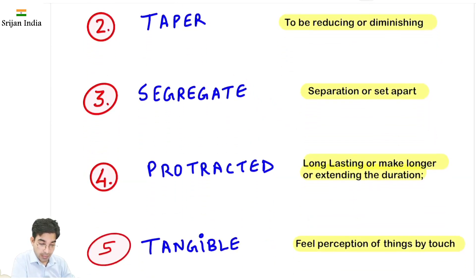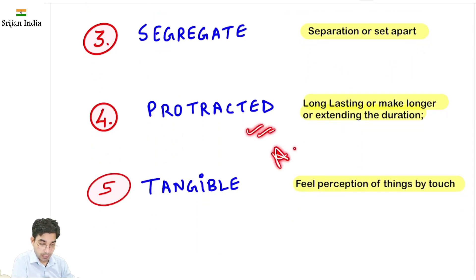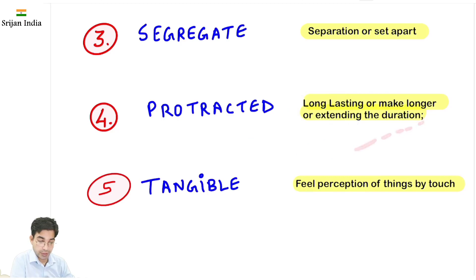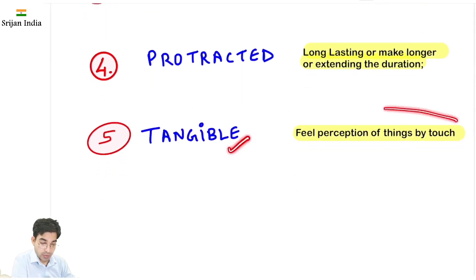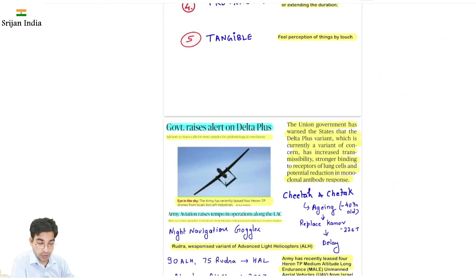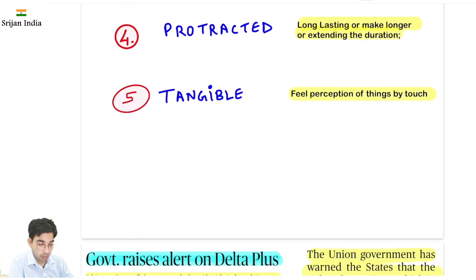'Segregate' — aggregate karna matlab saath laana, segregate karna matlab separate karna. 'Protracted' — jaise Afghanistan mein protracted war thi USA ki — matlab long-lasting, make longer, extending the duration. 'Tangible' — woh cheezein jo hum perceive kar sakte hain by touch; tangible heritages aur intangible heritages hoti hain. If you come across any other important word, write it down with its meaning in the comment section below.